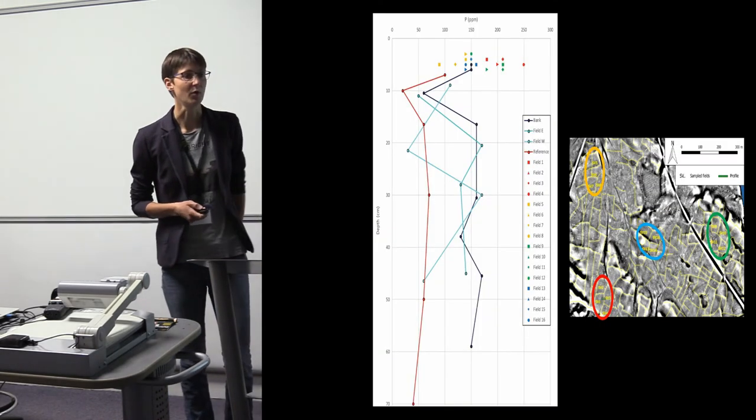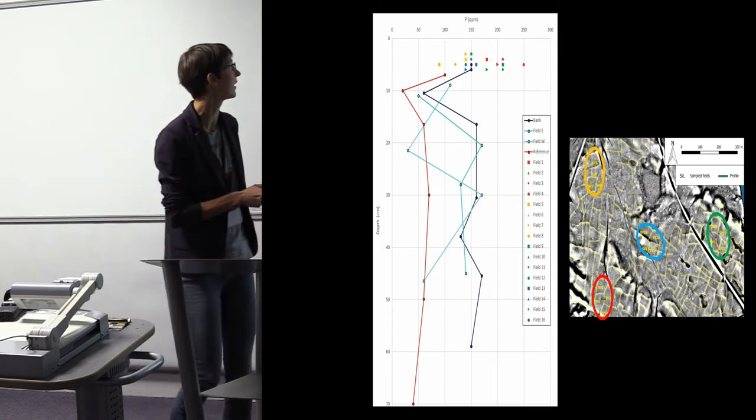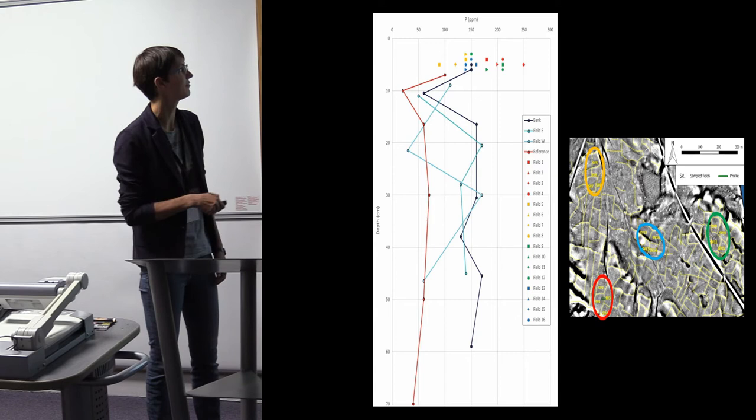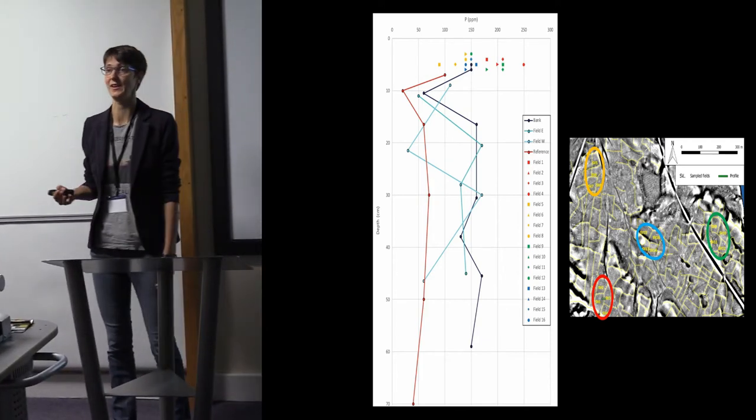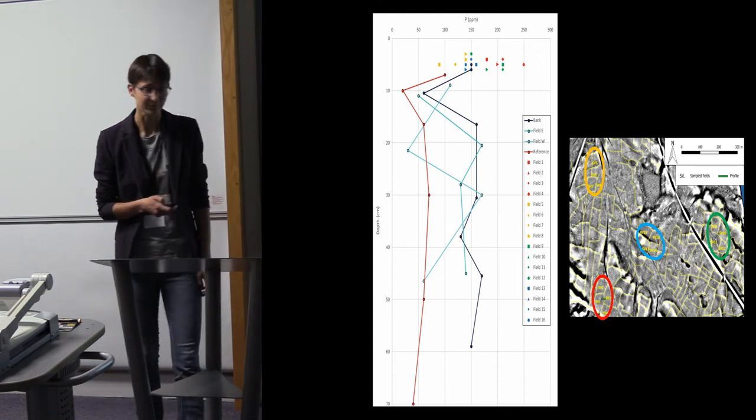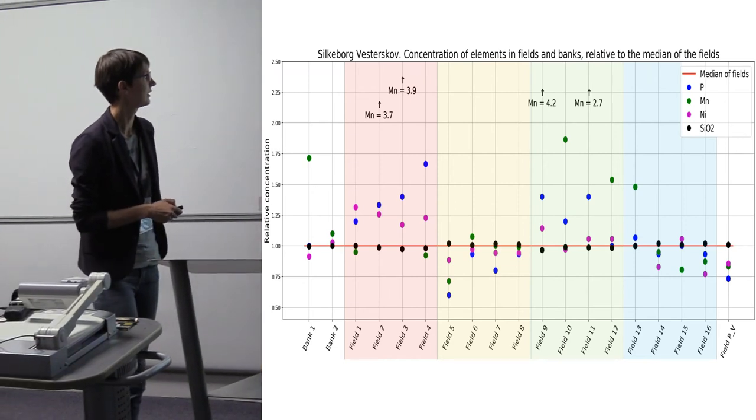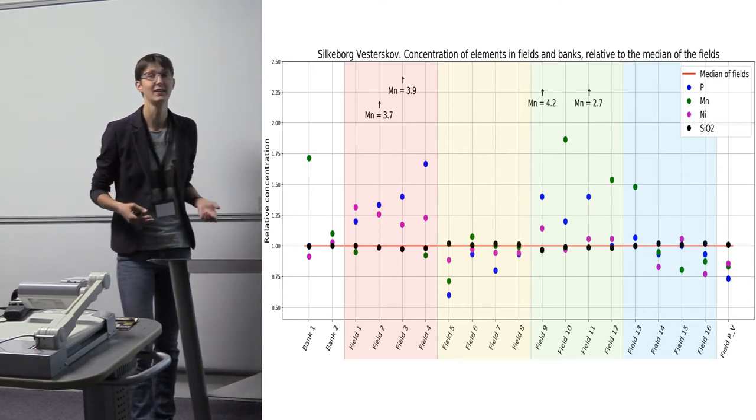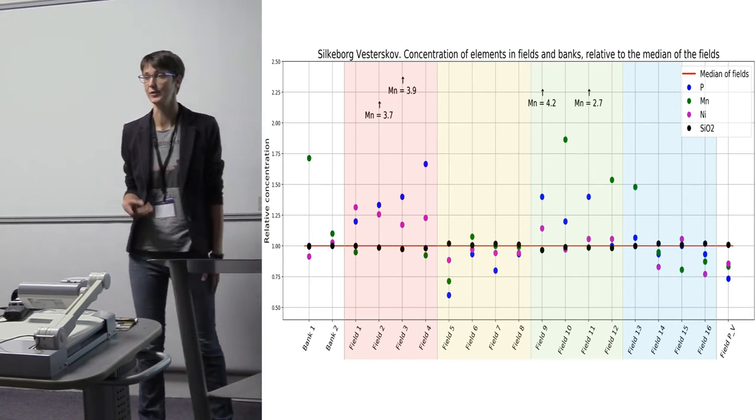If you look more closely at Silkeborg Vesterskøv, the red is showing the phosphorus content in Holtkratz, and then we have the bank results and the fields. You can see slightly enhanced values. Also up here you have some enhanced phosphorus values, not a lot. If you look at the values, this is not heavily manured soils in any way, just a little. We can also see differences between different areas within the field system. Again you can see the phosphorus values. Clearly the red and green group of fields generally show more evidence of phosphorus and manganese. These have probably been manured more than the other groups of fields.